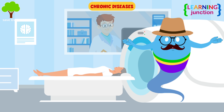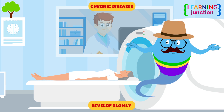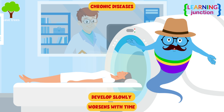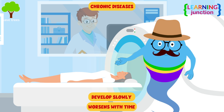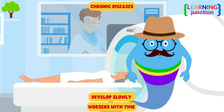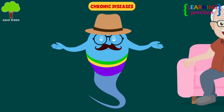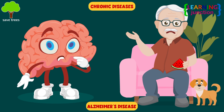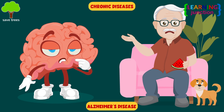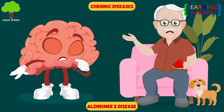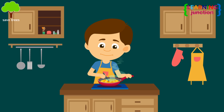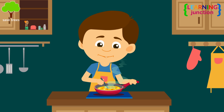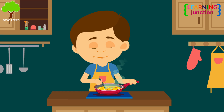Chronic diseases develop slowly and may worsen over an extended period of time — months or even years. For example, Alzheimer's disease, where people start losing their memory slowly.